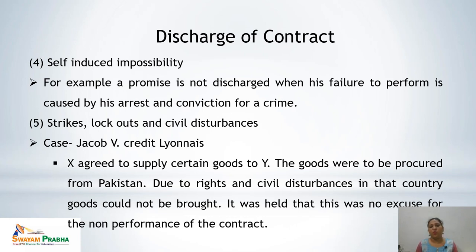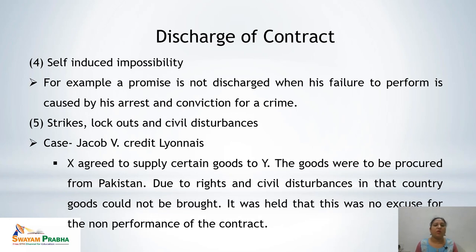Fourth exception is self-induced impossibility. If the promisor has conditions which have induced self-impossibility of performance, it does not count as impossibility to perform. For example, a promisor is not discharged when his failure to perform is caused by his arrest and conviction for a crime. If any person is not performing because he is being arrested or convicted for a crime, this is counted as self-induced impossibility, and the parties still have to perform the contract.